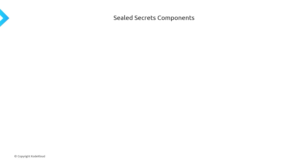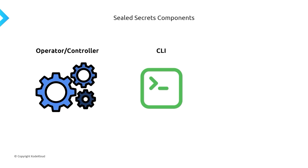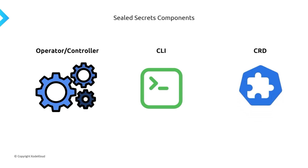With Sealed Secrets there are three main components. First, you've got an operator or controller — a Sealed Secrets operator that you deploy onto your Kubernetes cluster, which is responsible for actually decrypting your secrets. Second, you've got a CLI tool called kubeseal, which takes your secret and performs the encryption. Once the operator sees the encrypted secret, it performs the decryption and passes it off to your containers. Finally, you have a custom resource definition — instead of creating regular secrets, you create sealed secrets, which is a custom resource defined within Kubernetes, and that's how the operator knows when to perform the decryption process.